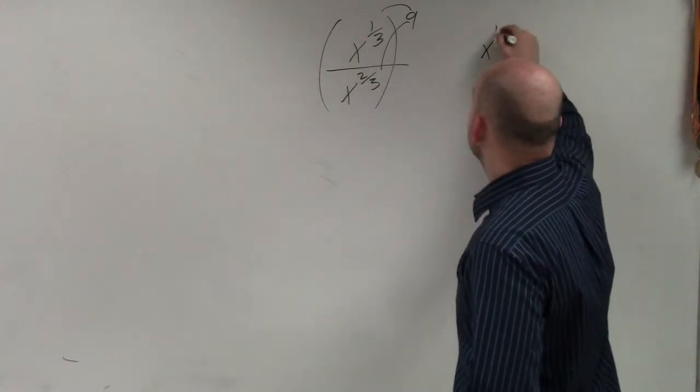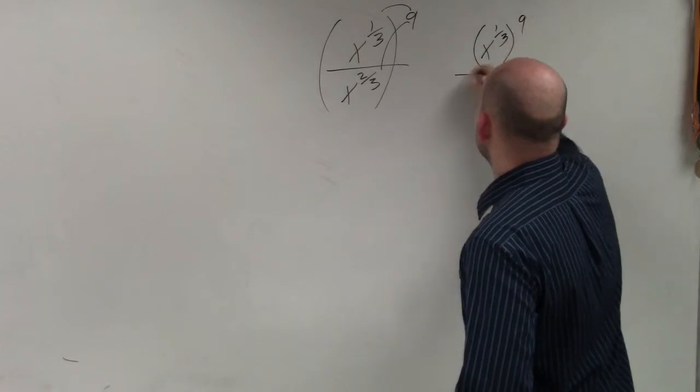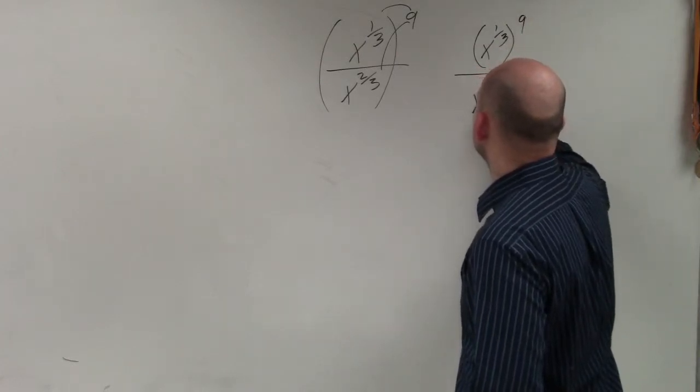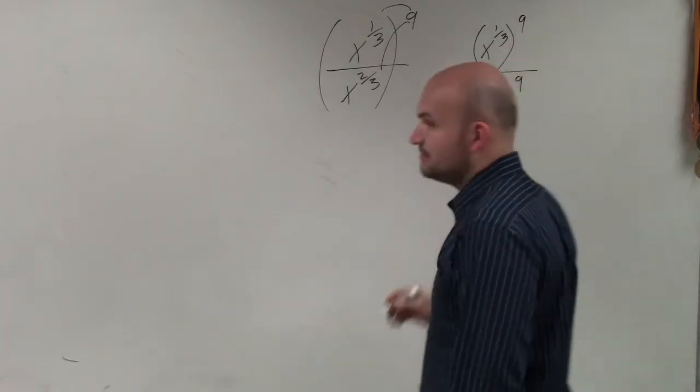So therefore, this is basically x to the 1/3rd raised to the 9th power over x to the 2/3rds raised to the 9th power.